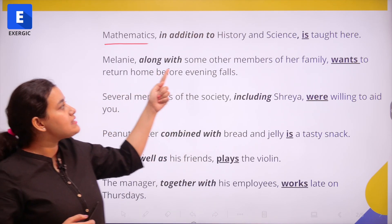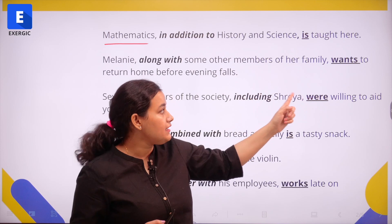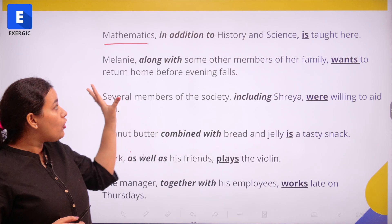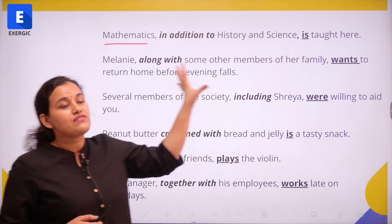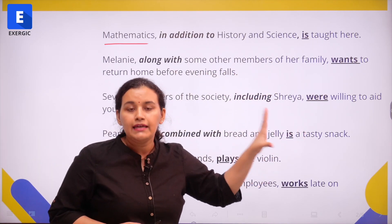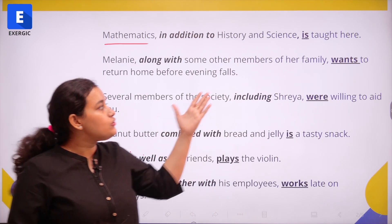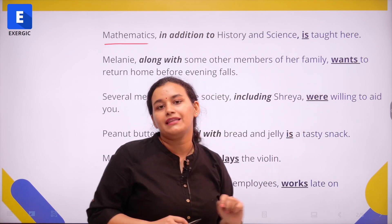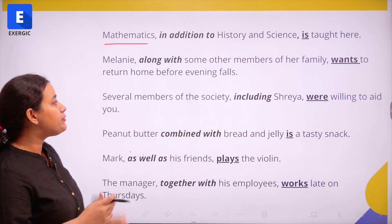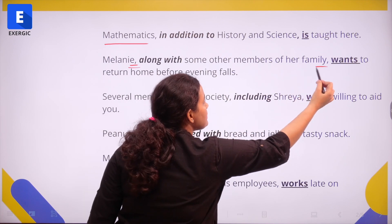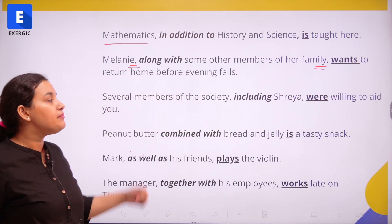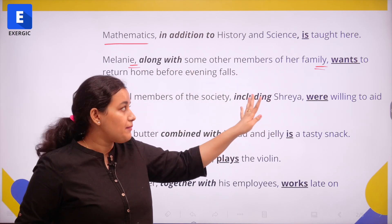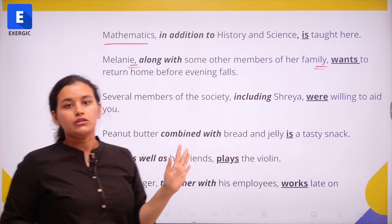Melanie along with some members of her family wants to return home before evening falls. Although we are talking about Melanie as well as some members of her family, it may seem the subject is plural and the verb should be "want," but that is not so. Since we have put the connective phrase in commas, it is not going to change the number of our main subject, which is singular. So: Melanie along with some other members of her family wants to return home.